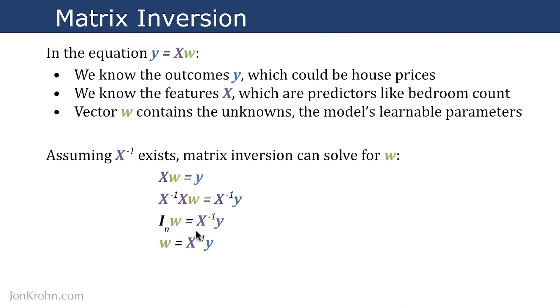So now we have a neat equation that we can use to solve for the unknown vector w. It's simply the matrix inverse of x and the vector y multiplied by each other.